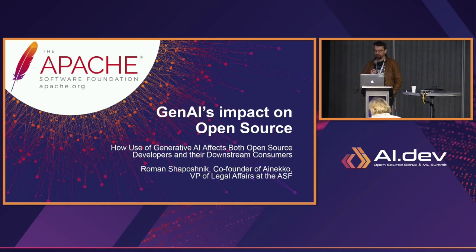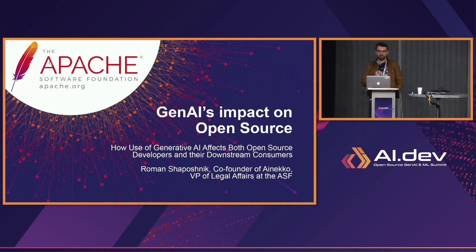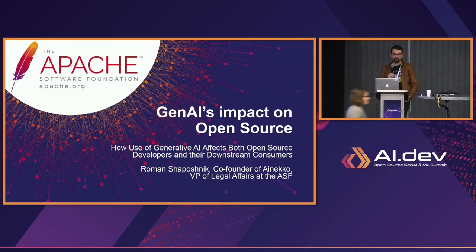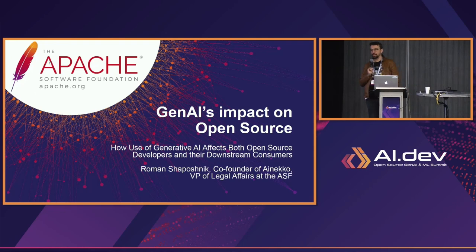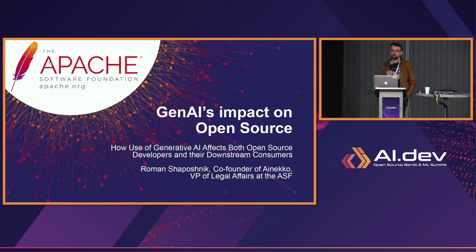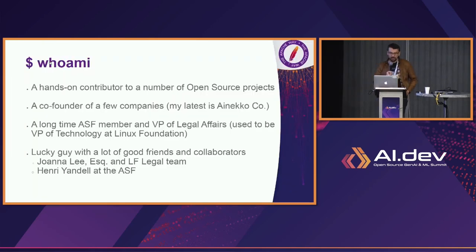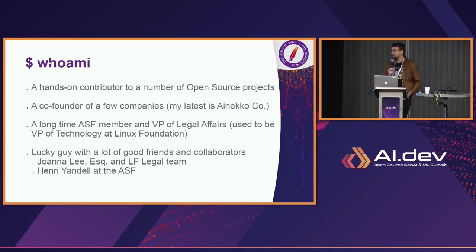My name is Roman. I wear multiple hats. Day job is co-founder of an AI company, building a set of open source tools — think of us as a little bit like open source Hugging Face for AI. I also happen to be VP of Legal Affairs at the Apache Software Foundation and have been a hands-on contributor to a number of big data projects in the Apache family.